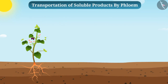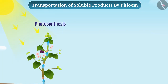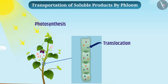Transportation of water is important, but at the same time, transportation of soluble products of photosynthesis, amino acids, and other substances is also important. This job is done by phloem. The transportation of soluble products of photosynthesis is called translocation.